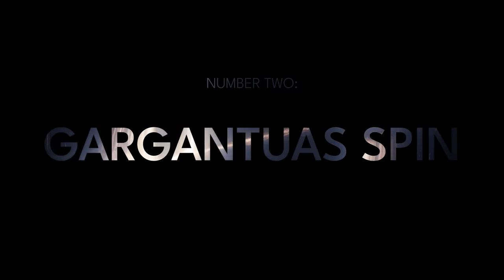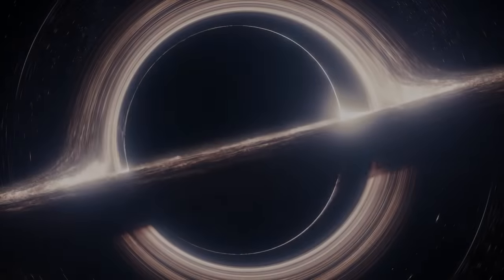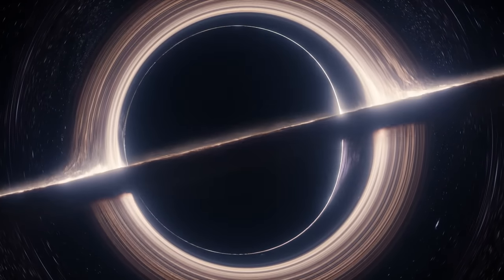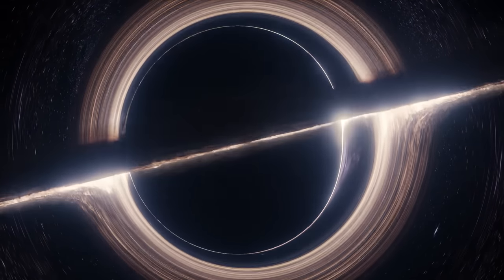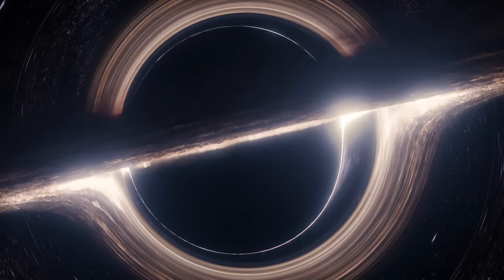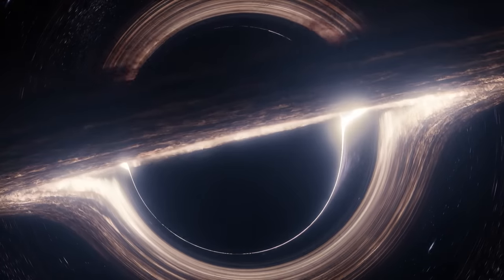Number 2: Gargantua's Spin. Throughout the movie, we see the black hole's shadow as a bit of a circle move slightly to the right. This is actually pretty inaccurate when you realize that Gargantua required an incredibly fast spin for the dramatic time dilation on Miller's planet to occur.